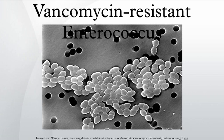The significance is that Van A VRE is resistant to both vancomycin and teicoplanin, Van B VRE is resistant to vancomycin but susceptible to teicoplanin, and Van C is only partly resistant to vancomycin and susceptible to teicoplanin.